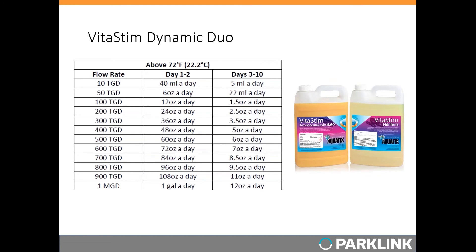Dosing is based on two main factors: influent flow rate and temperature. The warmer the temperature, the less product is required; colder temperatures require more. For an average one-million-gallon-per-day plant with influent ammonia less than 40 ppm at 60–72°F, about one gallon per day of each part — nitrifiers and assimilators — would be added for four days, then a reduced maintenance dose for six additional days. In almost every case, ammonia will drop down to where it needs to be.